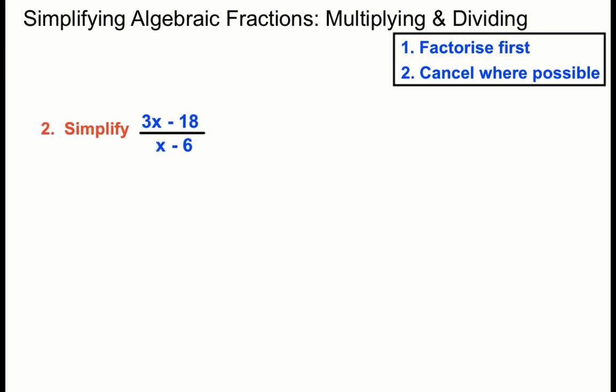Here we can factorise the top. 3 can go into the top. 3 lots of x makes 3x. We ask ourselves 3 lots of what makes minus 18? In this case minus 6. Now we had an x minus 6 on the bottom, so we can actually divide the bottom by x minus 6 and it goes once and into the top once. So the brackets can cancel out there.